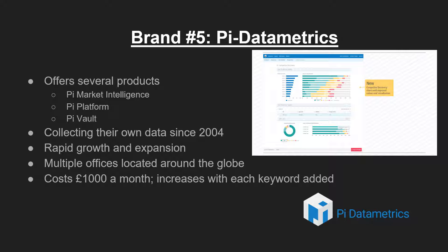By collecting their own data since 2004, PIE provides historical data that has helped industry leaders grow their business since adopting PIE. Since establishing their platform in 2013, PIE has maintained rapid growth and expanded across the globe, with offices located in New York, London, Brighton, Stockholm, Singapore, Bangkok, and Hyperbat. PIE offers plans starting at £1,000 a month, with an increase in price per each keyword added.